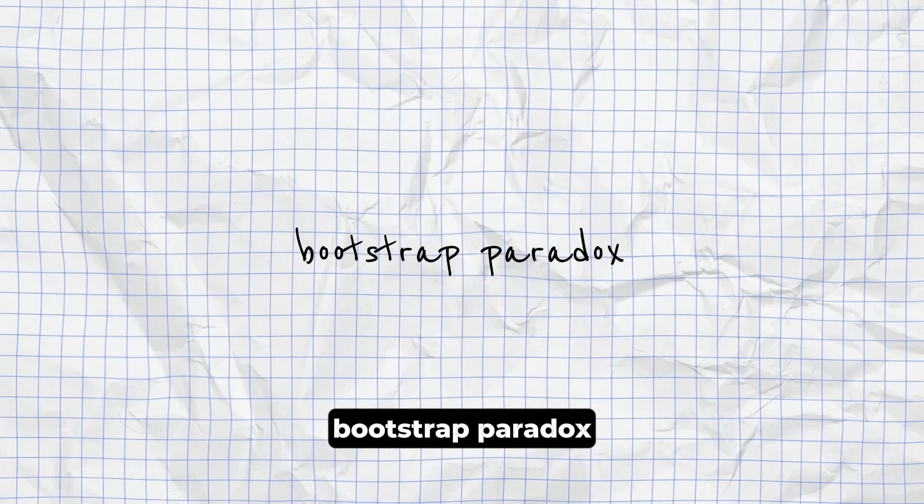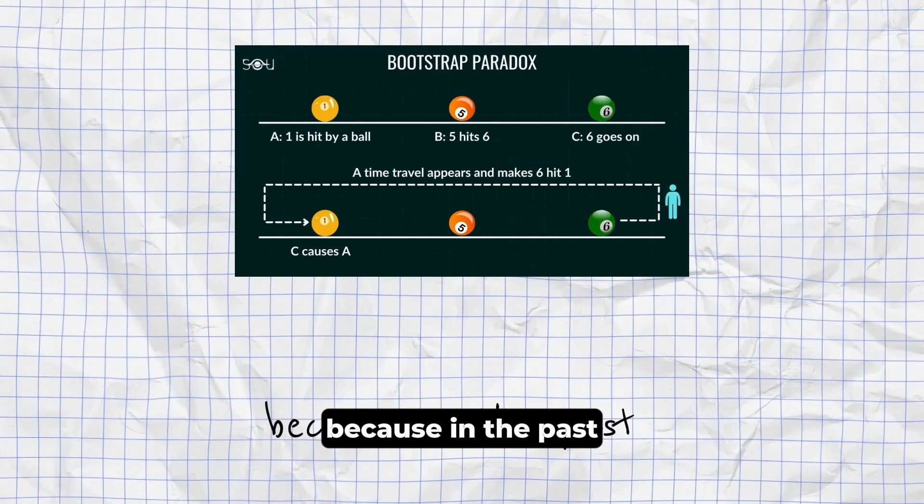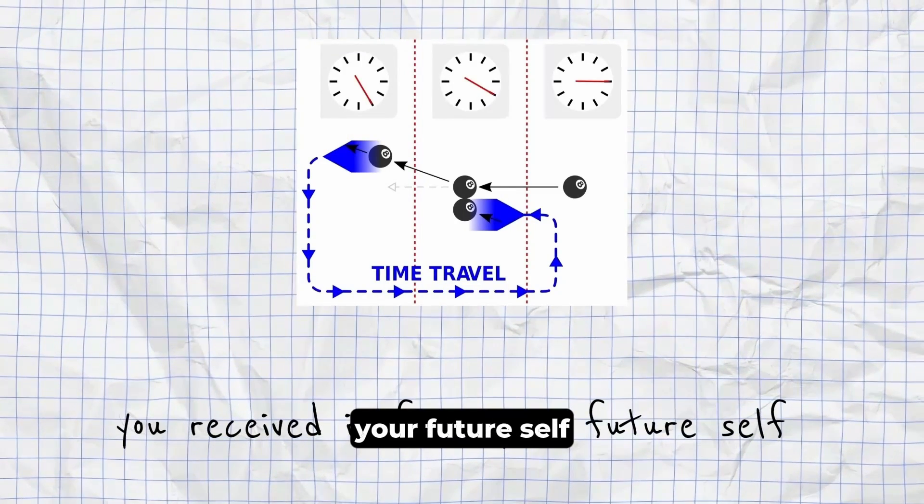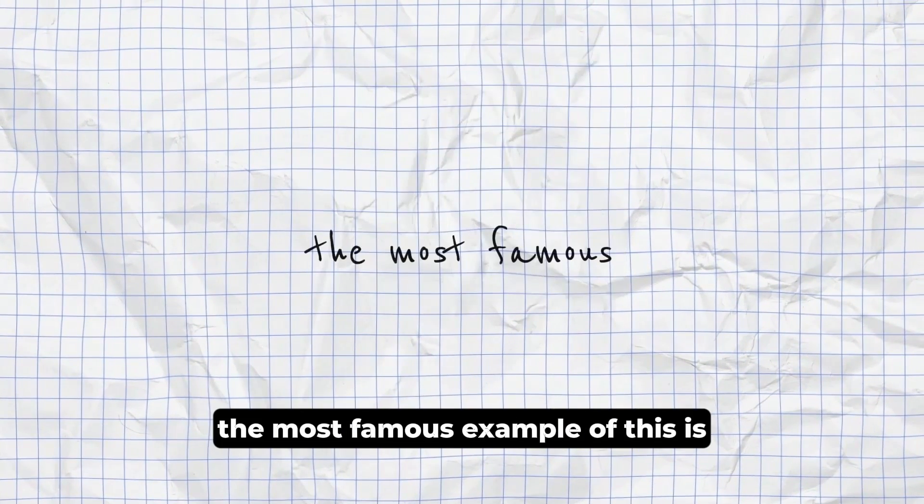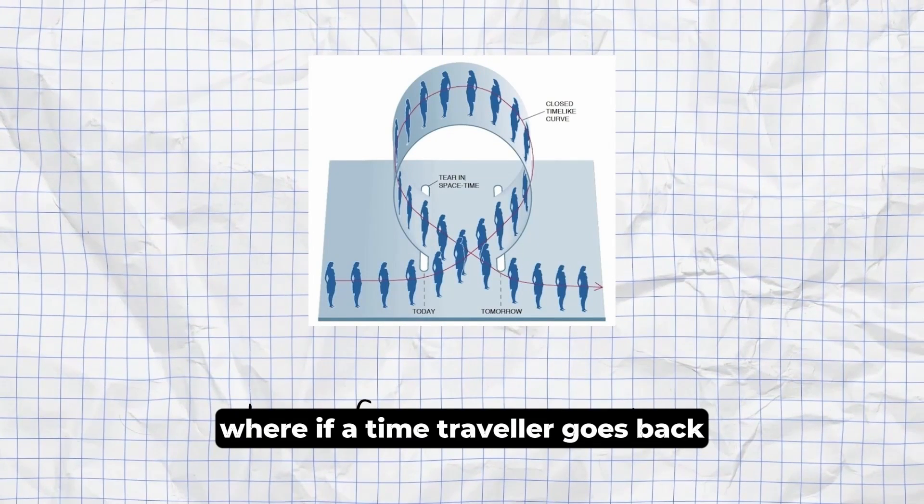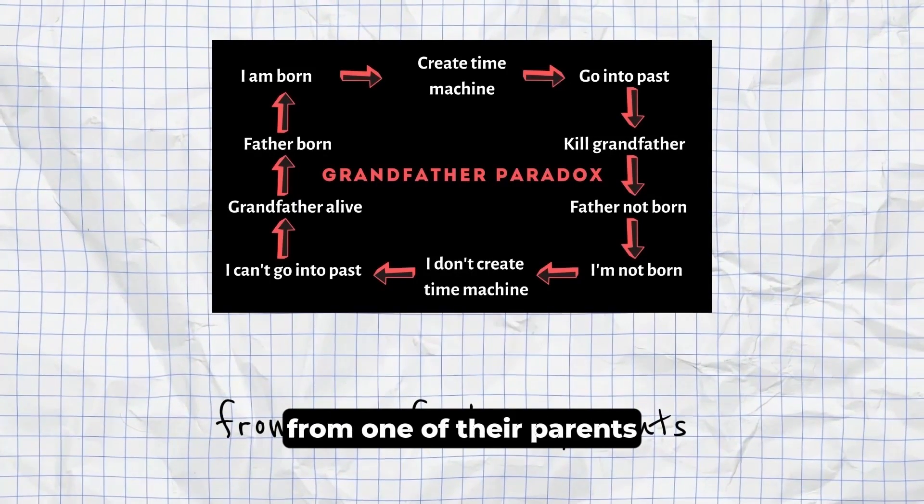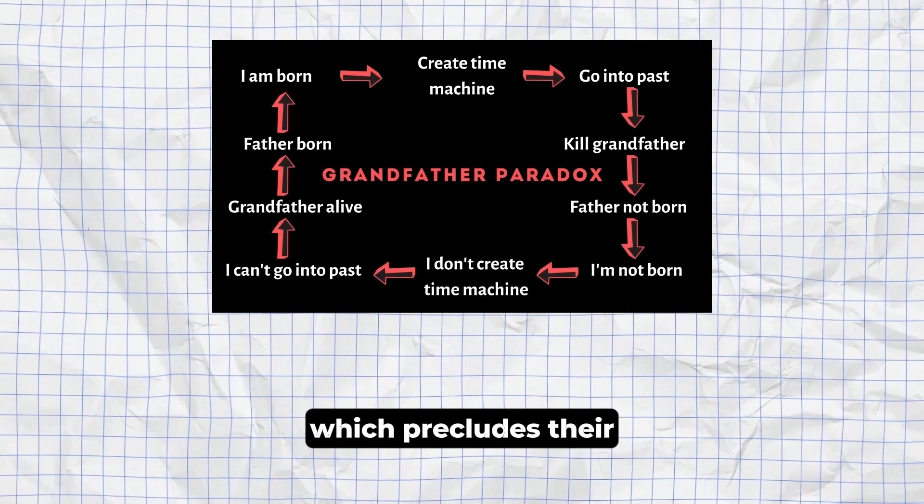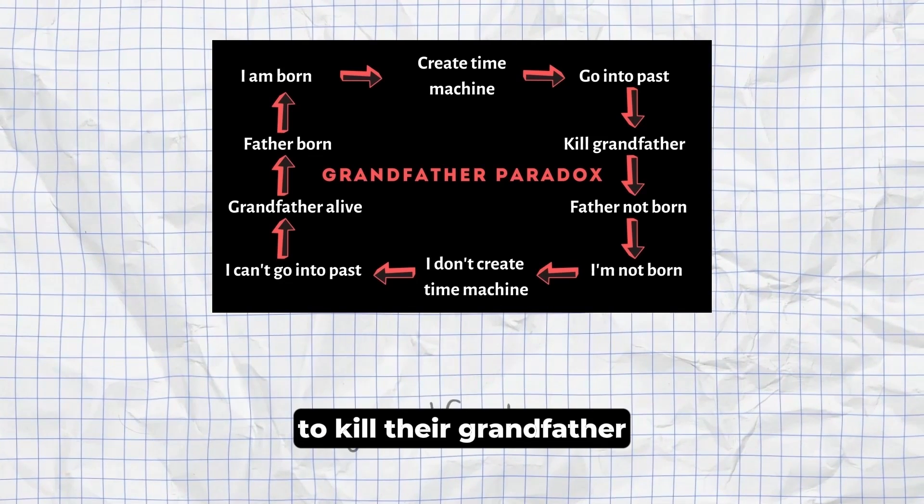Bootstrap Paradox. You send information to your past self. You only have that information because in the past, you received it from your future self. This means the information was never created, yet still exists. The most famous example of this is the Grandfather Paradox, where if a time traveler goes back and kills their grandfather before he has conceived one of their parents, which precludes their own conception and therefore they could not go back and travel in time to kill their grandfather.